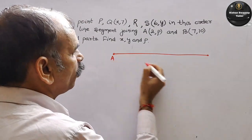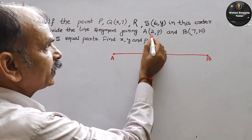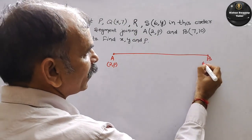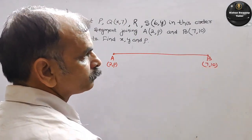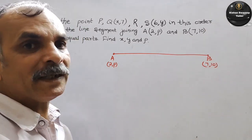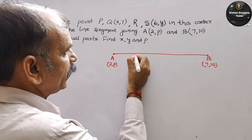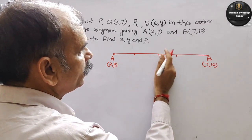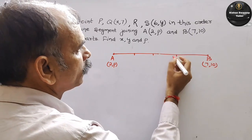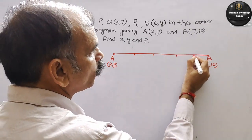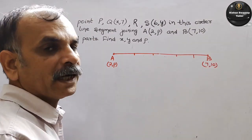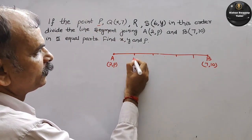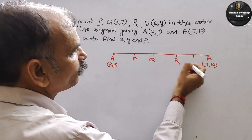Yeh hai aapka A, aur yeh hoga aapka B. A ke coordinates kya diye hain: 2, P. Next, B ke coordinates diye hain: 7, 10. Aur isko 5 parts mein divide karna hai. 5 equal parts mein divide karna hai, aur uske naam bhi diye hain — P is first, 2nd is Q, phir R hai, phir S.